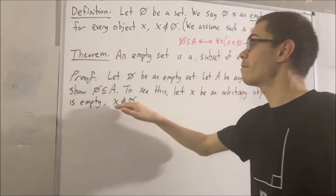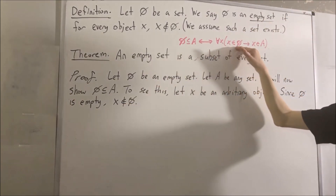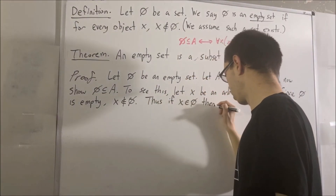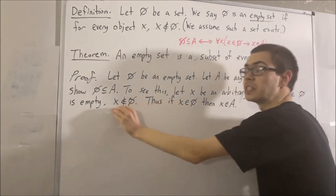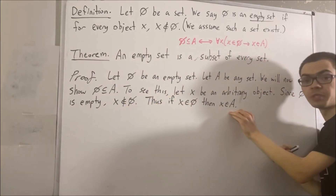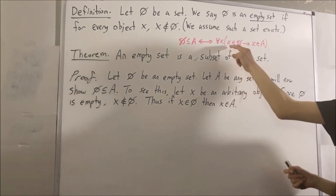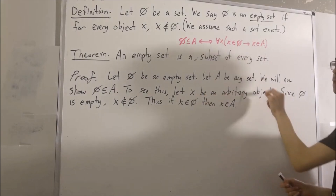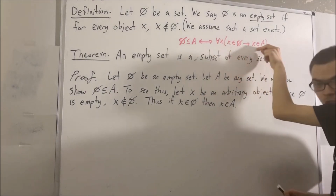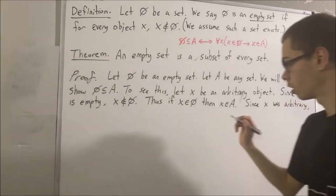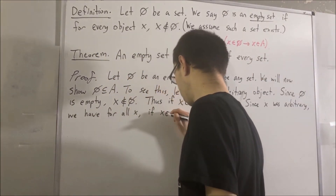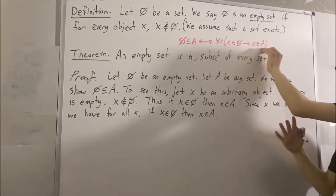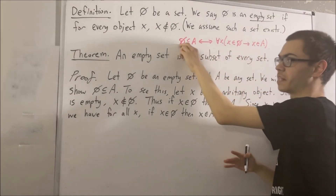But then, that means: if x is an element of our empty set, then x is an element of A. Because x is not an element of our empty set, this statement is vacuously true. So we've proven this statement. And since x is an arbitrary object, this means for all objects x, this is true.